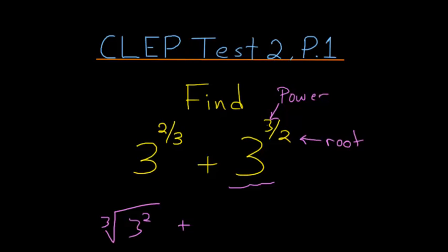And for 3 to the 3 halves power, that's the same thing as 3 to the 3rd power, and we take the square root of that. And with a scientific calculator, you can actually figure these out.